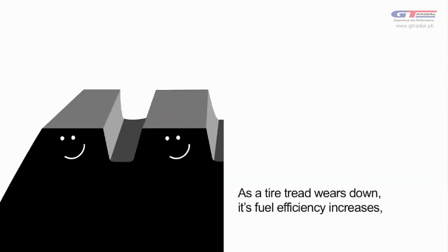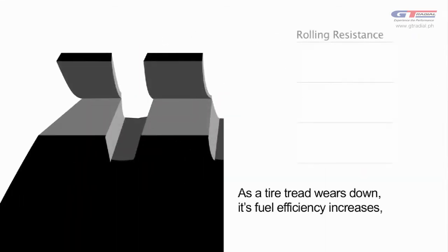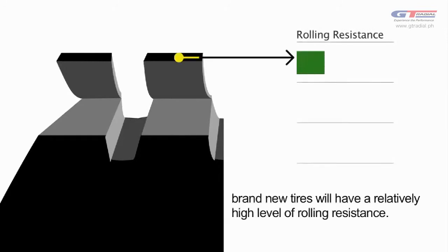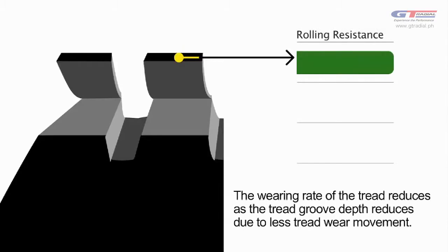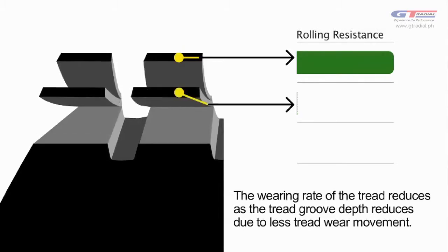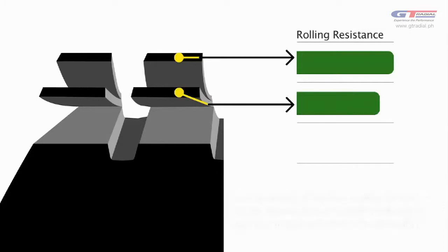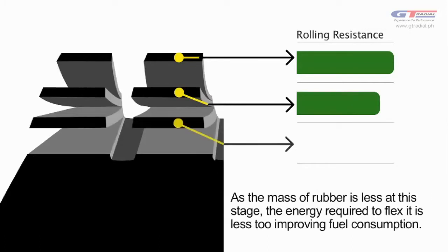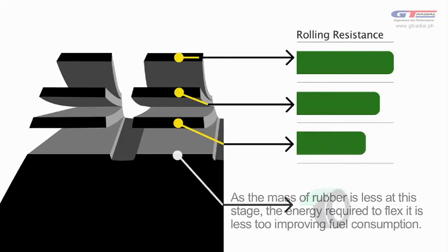As a tire tread wears down, its fuel efficiency increases. Brand new tires will have a relatively high level of rolling resistance. The wearing rate of the tread reduces as the tread groove depth reduces due to less tread movement. As the mass of rubber is less at this stage, the energy required to flex it is less too, improving fuel consumption.